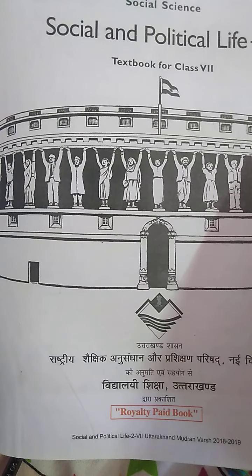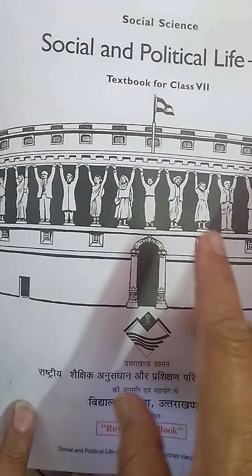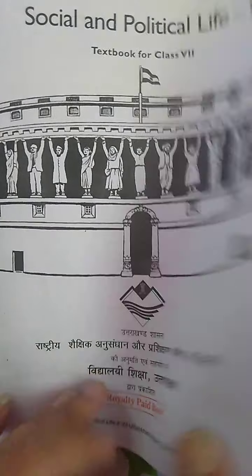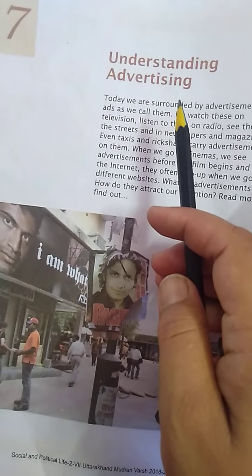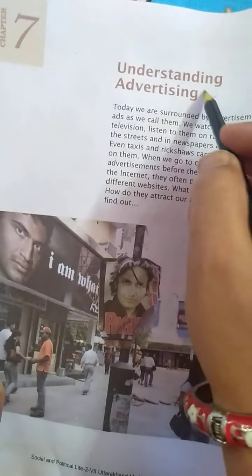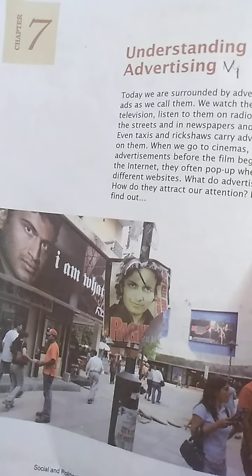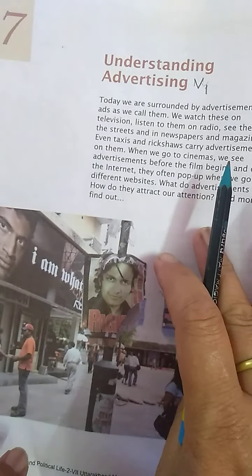Hello students, how are you? I hope you all are doing well. This is your social science class and today we will read Social Science: Social and Political Life Volume 2, textbook for Class 7. Chapter number 7 is 'Understanding Advertising.' This is Video 1 of Chapter 7. So let's start — understanding advertising.